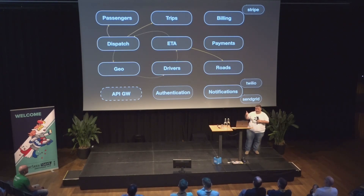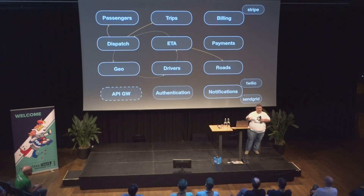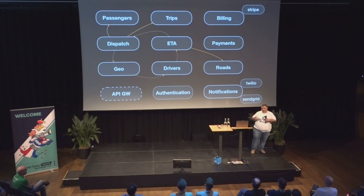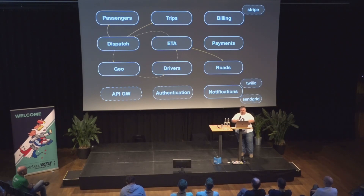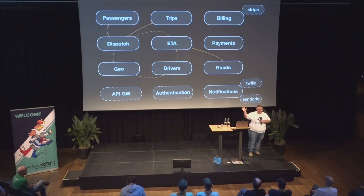This is actually the real Uber architecture — it's derived from Uber blog posts on how they built their system when they moved from monolith to microservices about three years ago. One caveat: they actually use Kafka as a message-passing transport because there's a lot of load, and they use it to stream locations. In real life, Geo gets a stream of all location updates, feeds it to drivers, ETA, and dispatch. I decided to simplify that because the architecture was already complex enough.